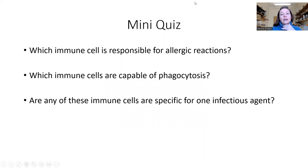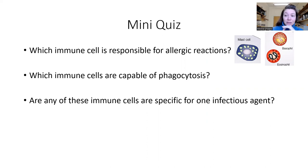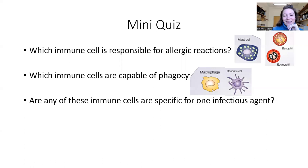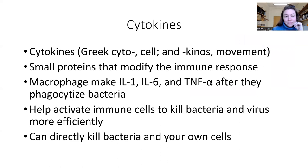Tiny quiz — see if you remember. Which immune cells are responsible for allergic reactions? Mast cell, basophil, eosinophil. Which immune cells are capable of phagocytosis? Macrophages and dendritic cells. And are any of these immune cells specific for one infectious agent? Nope. And don't forget the neutrophil — it can also perform phagocytosis.